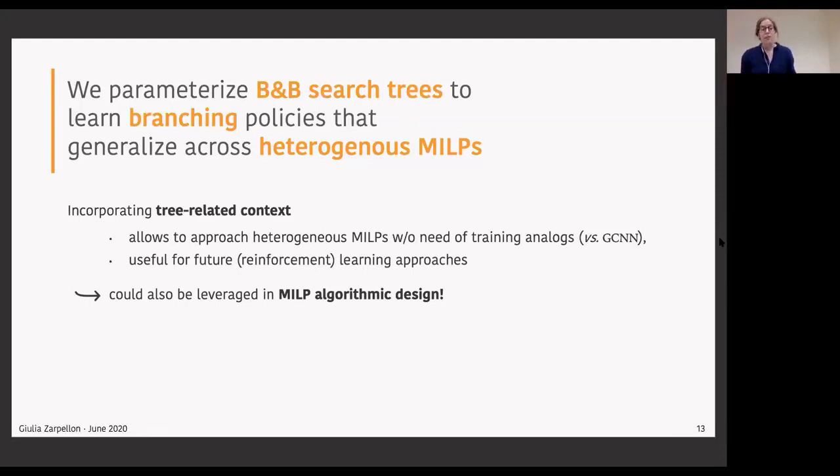Results have shown that parameterizing these search trees really helps to learn branching policies that are able to attain this broader generalization goal, to span across heterogeneous MILPs without the need of training analogues, without having seen in the training phase similar instances. This idea of incorporating a tree-related context for branching will definitely be useful for future learning to branch approaches, in particular those that will be developed with reinforcement learning instead of imitation learning. But more generally, we also believe that this idea could be leveraged more in MILP algorithmic design. Thank you.